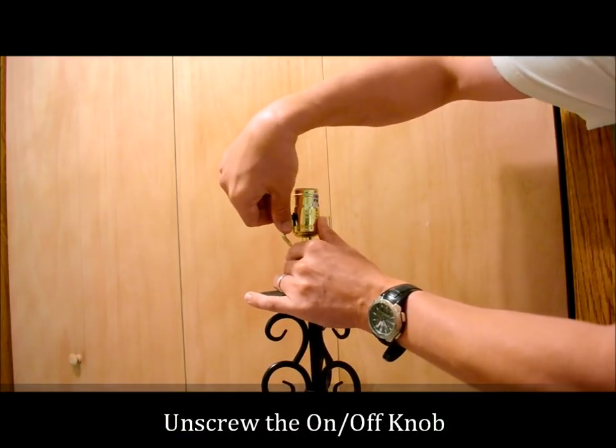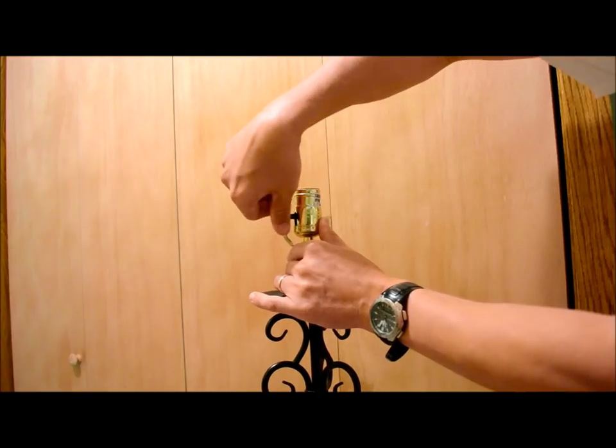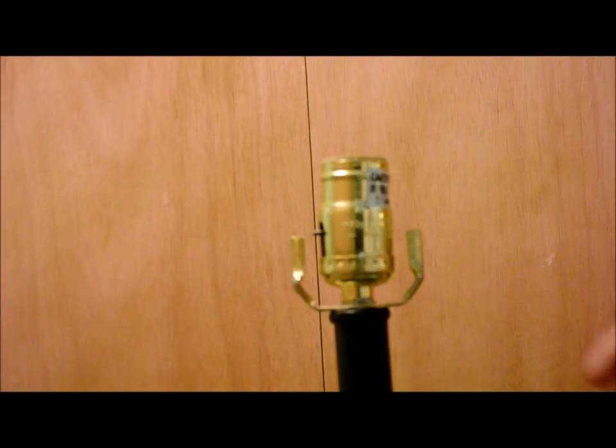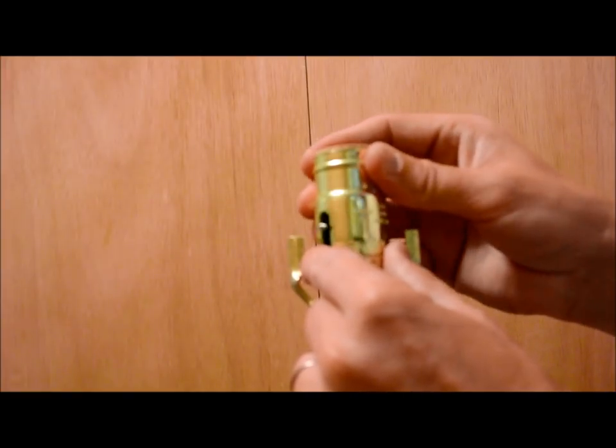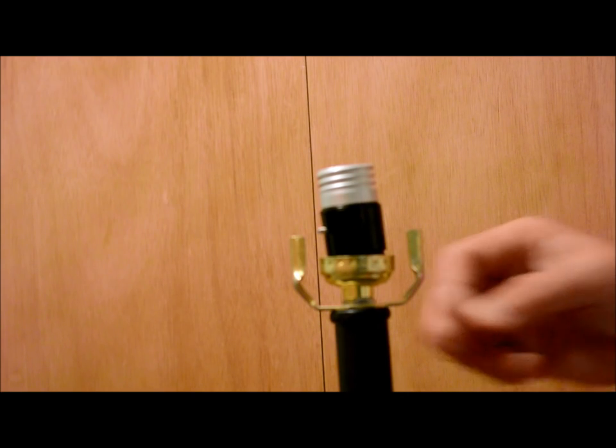A little switch here. It simply unscrews. Unthread that. This sleeve comes up. This is just crimped down. So we'll just work it up and this metal sleeve will come up. Set that to the side.